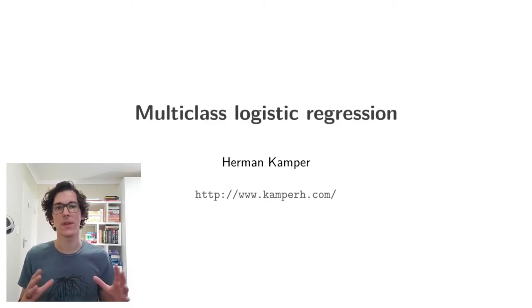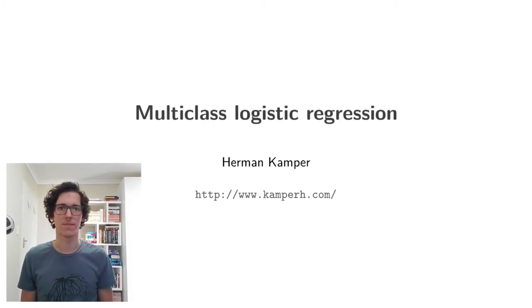We're going to look at two variants of multi-class logistic regression. The first is a one-versus-rest classification, and then the second one is softmax regression. Let's look at one-versus-rest classification.